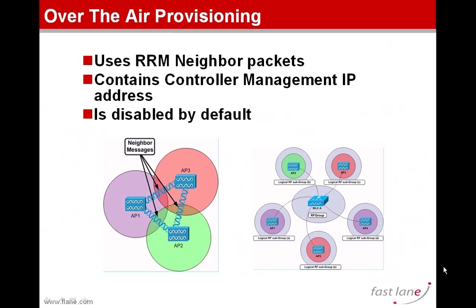So what happens if you send it? Well, anybody listening to the air — access points or an eavesdropper — could read this information and get the IP address of your controller. From then, they can try to initiate an attack on your controllers. That's why OTAP is disabled by default.